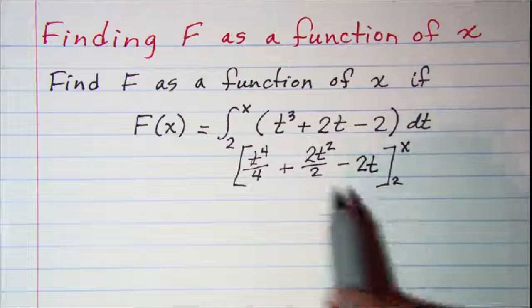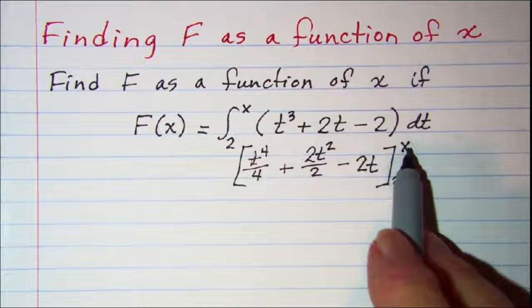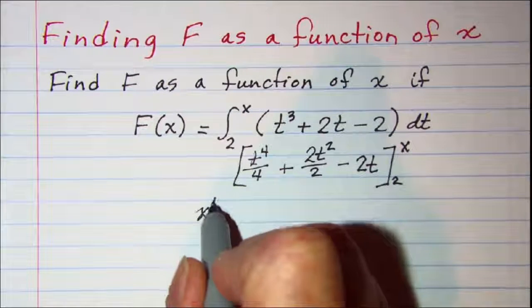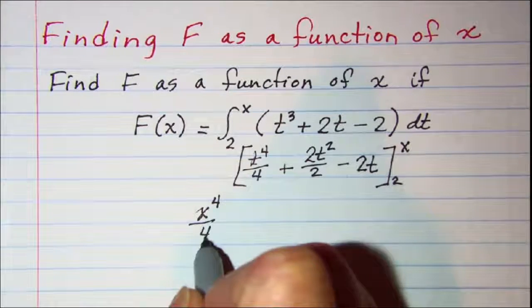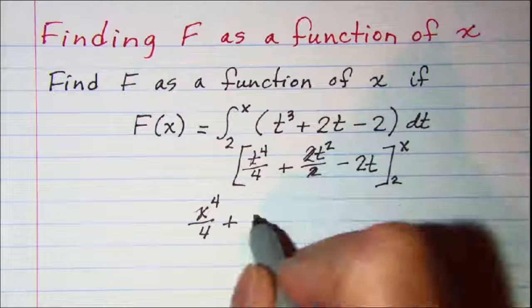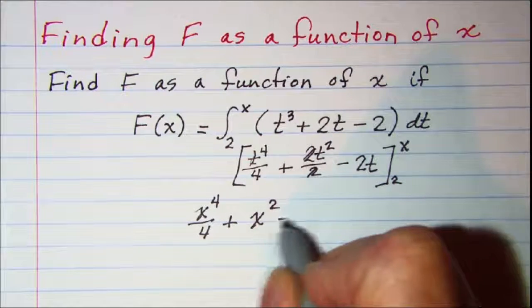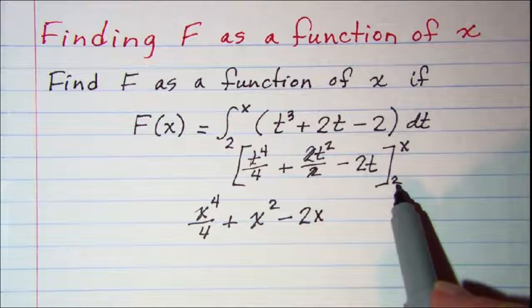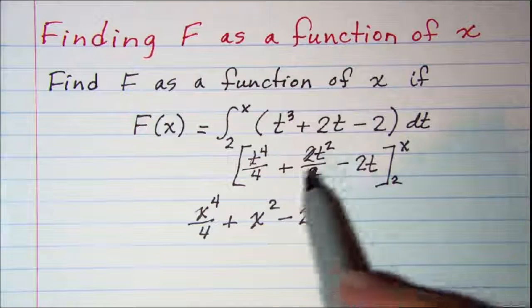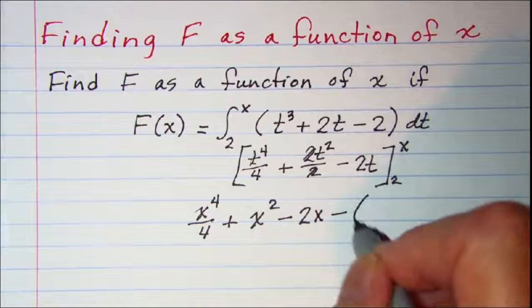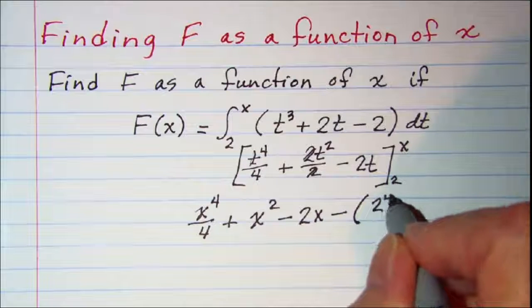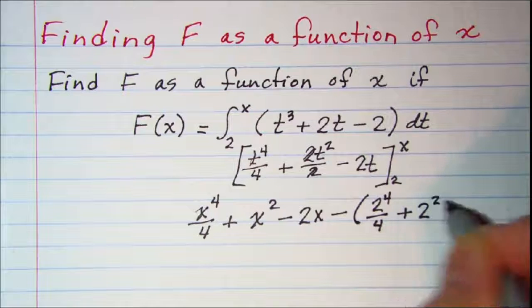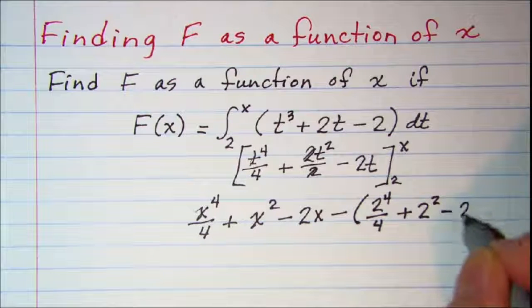The fundamental theorem of calculus tells us that we first want to substitute x for t. So we have x to the fourth divided by 4 plus x squared minus 2x, and then subtract from that the expression evaluated with 2 substituted for t. So minus 2 to the fourth divided by 4 plus 2 squared minus 2 times 2.